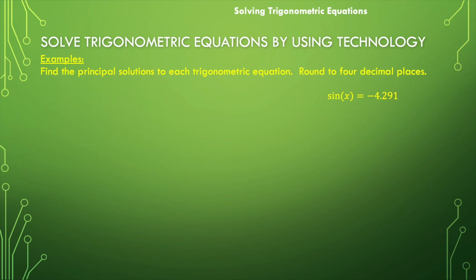Let's do what we would normally do. We would use our calculator. We would say x is equal to sine inverse of negative 4.291. And your calculator will give you a big, fat oops, a big, fat error message.